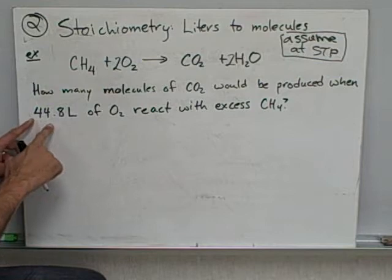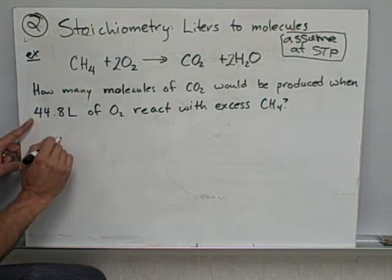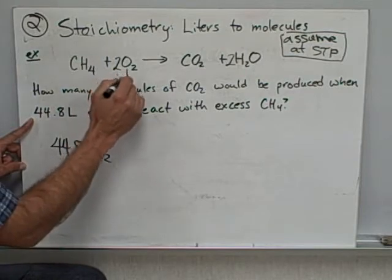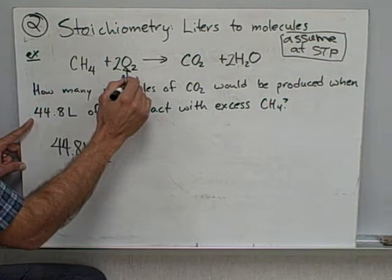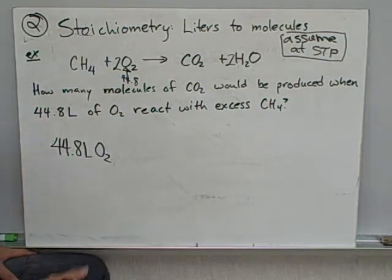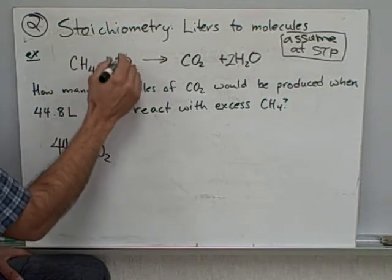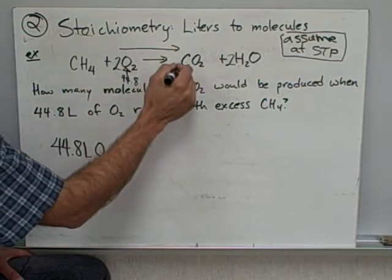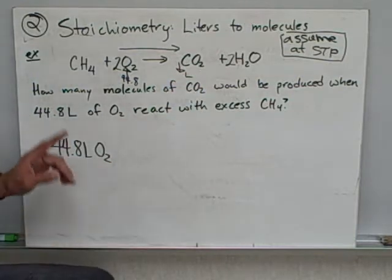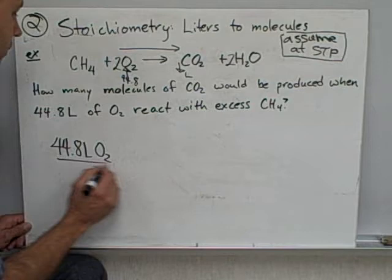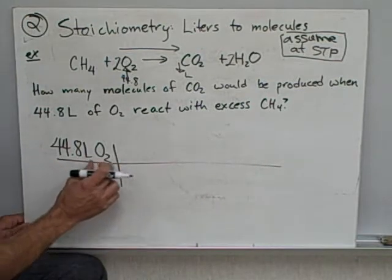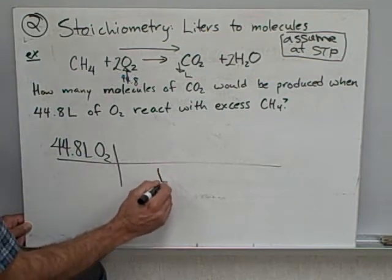All right so here we go. I'm going to start with what's given, 44.8 liters of oxygen. Now it says how many molecules of CO2, so I'm going to go from here up here, step over there and come back down using 22.4 liters. Liters of oxygen goes down here.